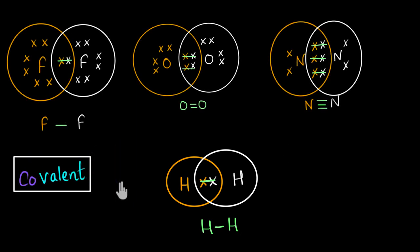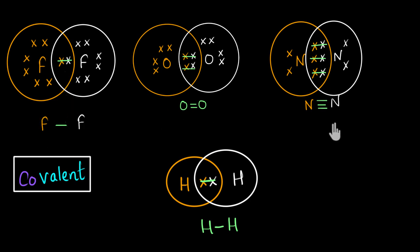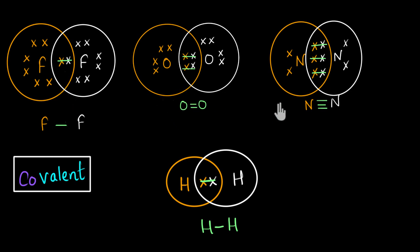Let's summarize the video. We spoke about covalent bonds, where atoms share electrons to become stable and stick together. We saw that these bonds could be single covalent, double covalent, or triple covalent. The major underlying principle was: if an atom needs one electron, it shares one; if it needs two, it shares two; if it needs three, it shares three.